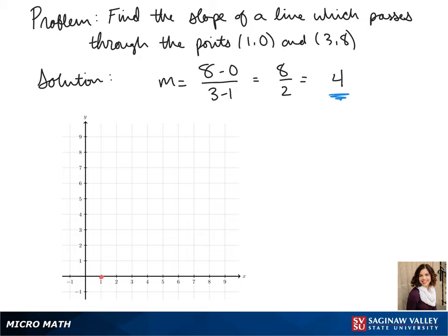To see what our line would look like, we graph 1, 0, and 3, 8, and that's our line.